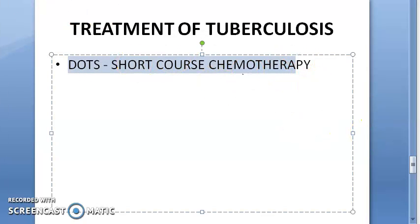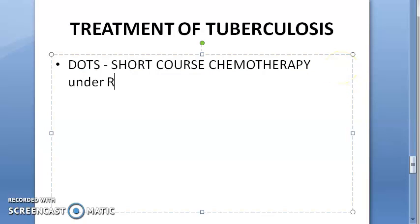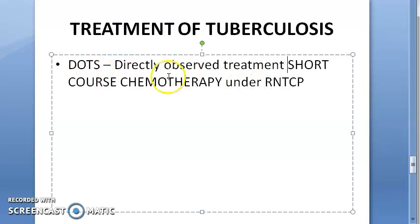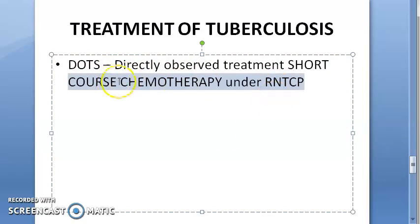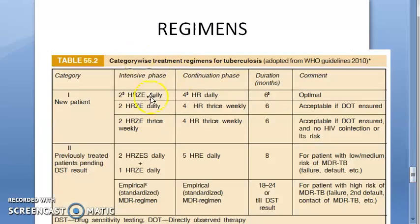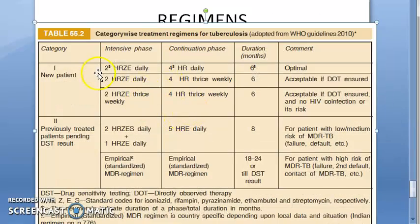DOTS has been asked in exams over five times. Under RNTCP, the regimens include categories for new patients, previously treated patients, and patients pending DST results. The regimens combine drugs like isoniazid, rifampin, pyrazinamide, and ethambutol (H-R-Z-E).